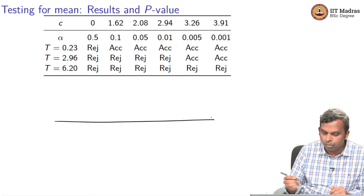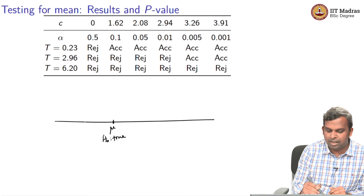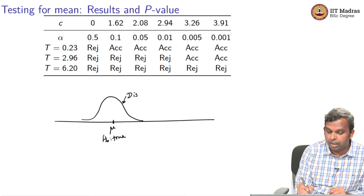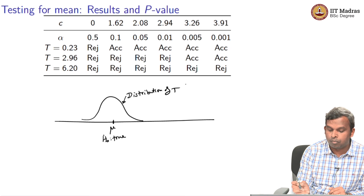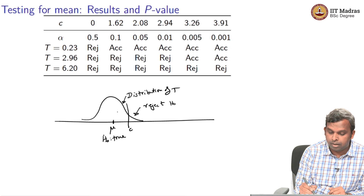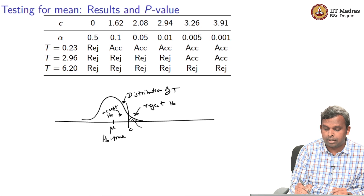Let me draw a picture. Under the null hypothesis H0, your mean is mu and your distribution is normal. This is the distribution of T. For different values of alpha, you will get different values of C. If T falls above C, you reject null; below C, you accept null. Alpha is the area to the right of C. As you keep reducing alpha, C moves further to the right, and you will only reject if T goes really, really large.